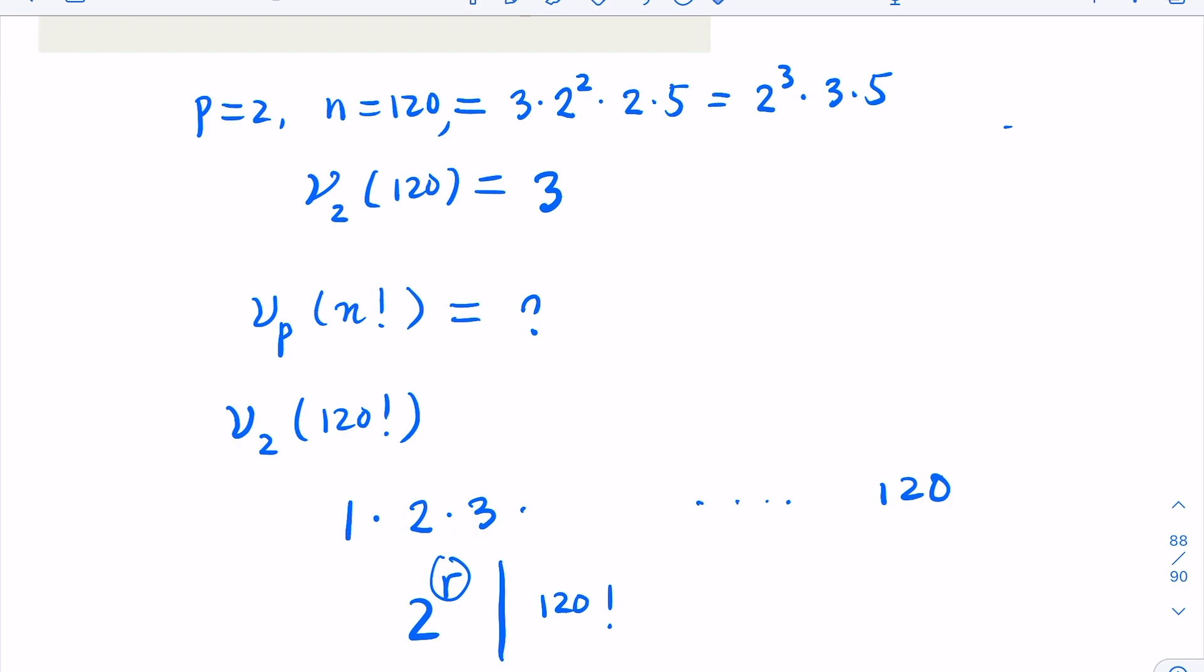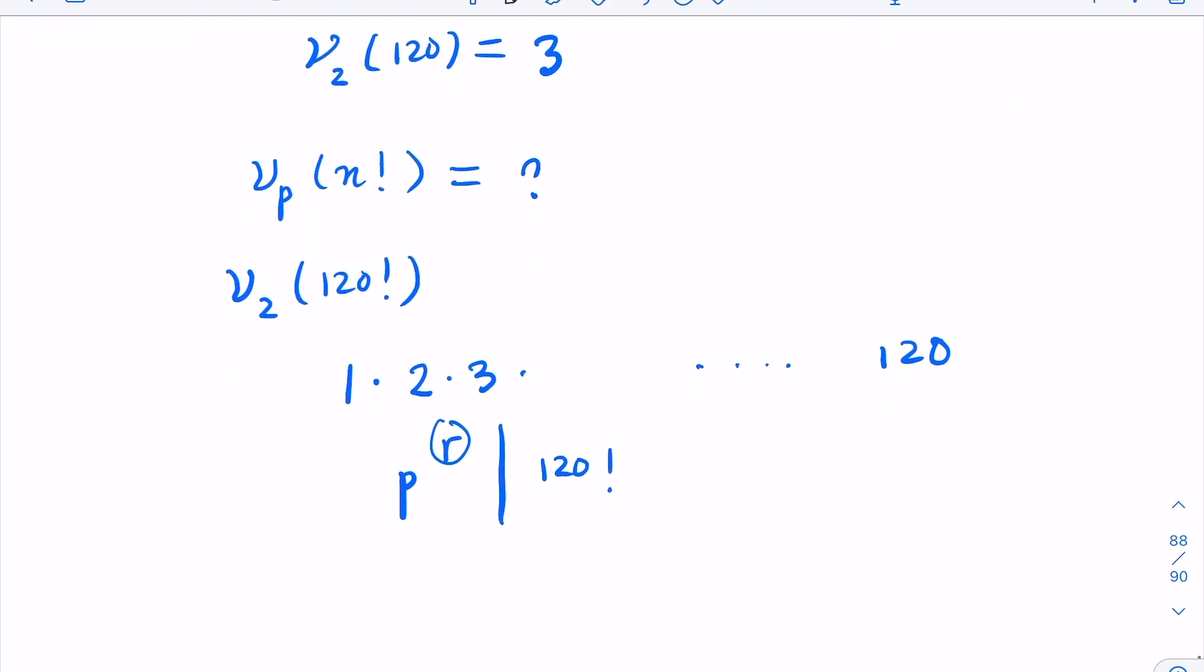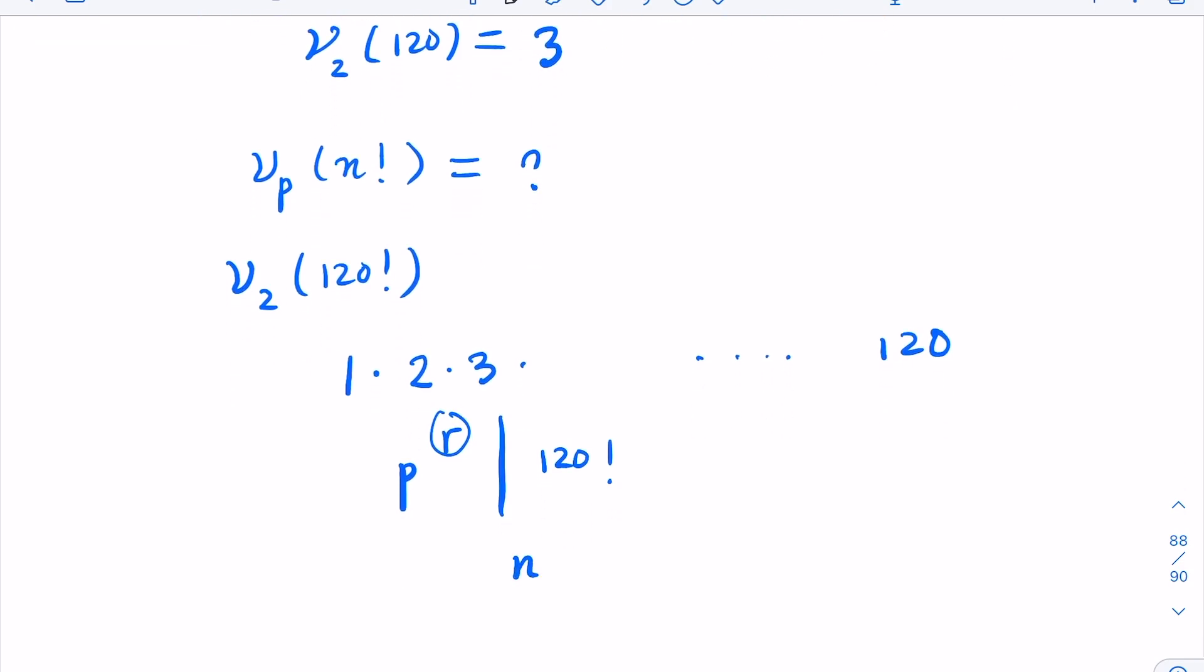Now, in general, for number p, if it's not 2, if it's p, the way you find it is how many number of p's in this n factorial. That is, in general, you have n divided by p, and it's going to be a floor function.